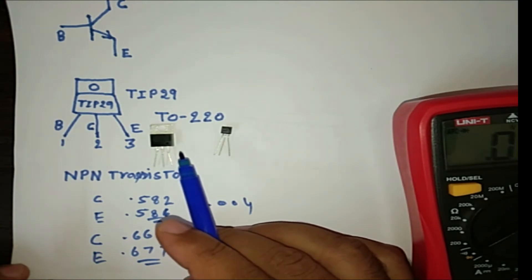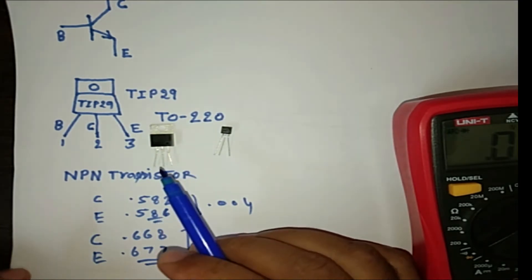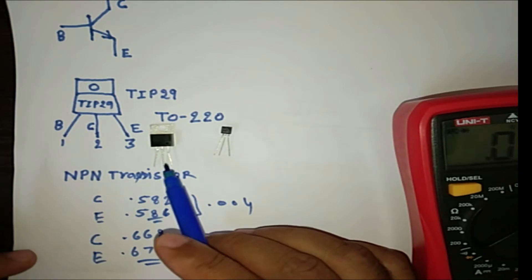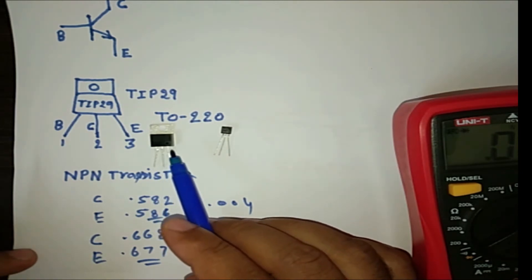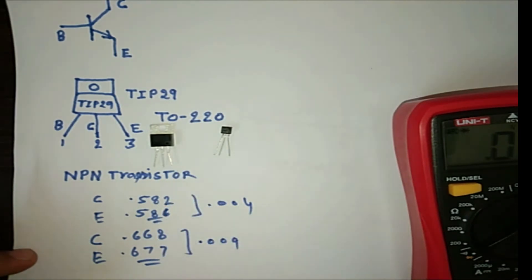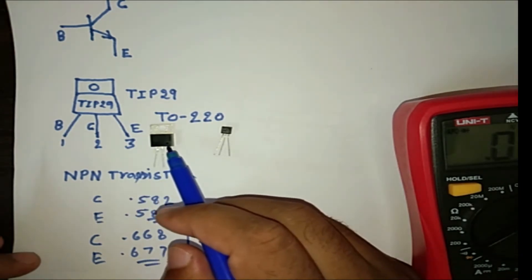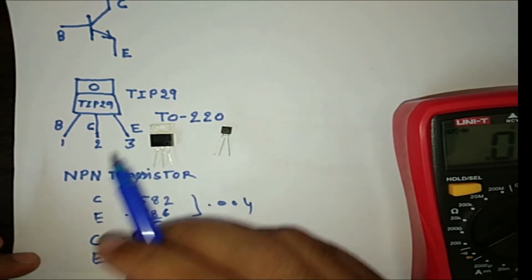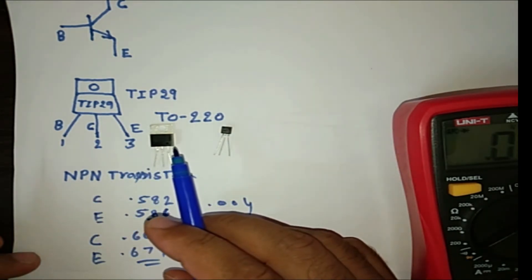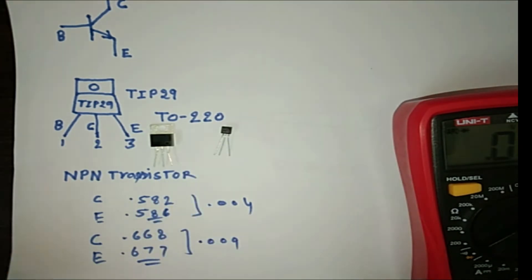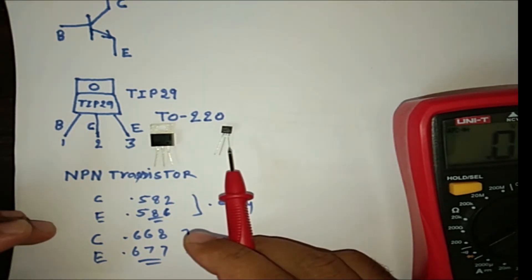So, the working way and the measuring way of both transistors are same. If you measure the value of this transistor, whether it is good or in damage condition, so you will check in the same condition as you check the small transistor.